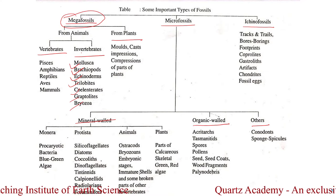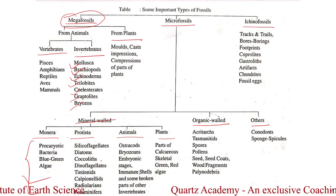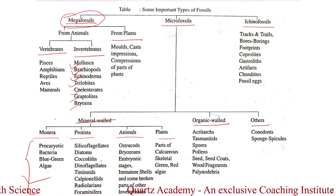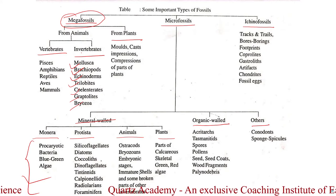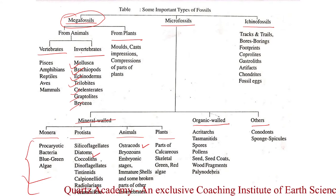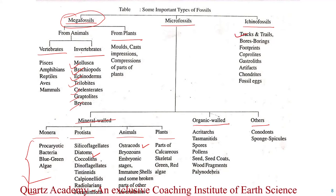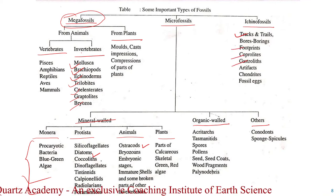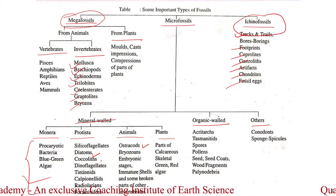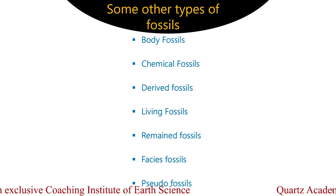This is the list where microscopic organisms come under Microfossil. For example, Ostracod is a Microfossil — not a Megafossil. Diatom, a circular algae, is a Microfossil. For Ichnofossil, any Tracks and Trails, Bores, Borings, Footprints, Coproliths, Gastroliths, Artifacts, Chondrites, and Fossil Eggs are considered as Ichnofossil. But these are not all the fossil types — we still have some other types of fossils too.